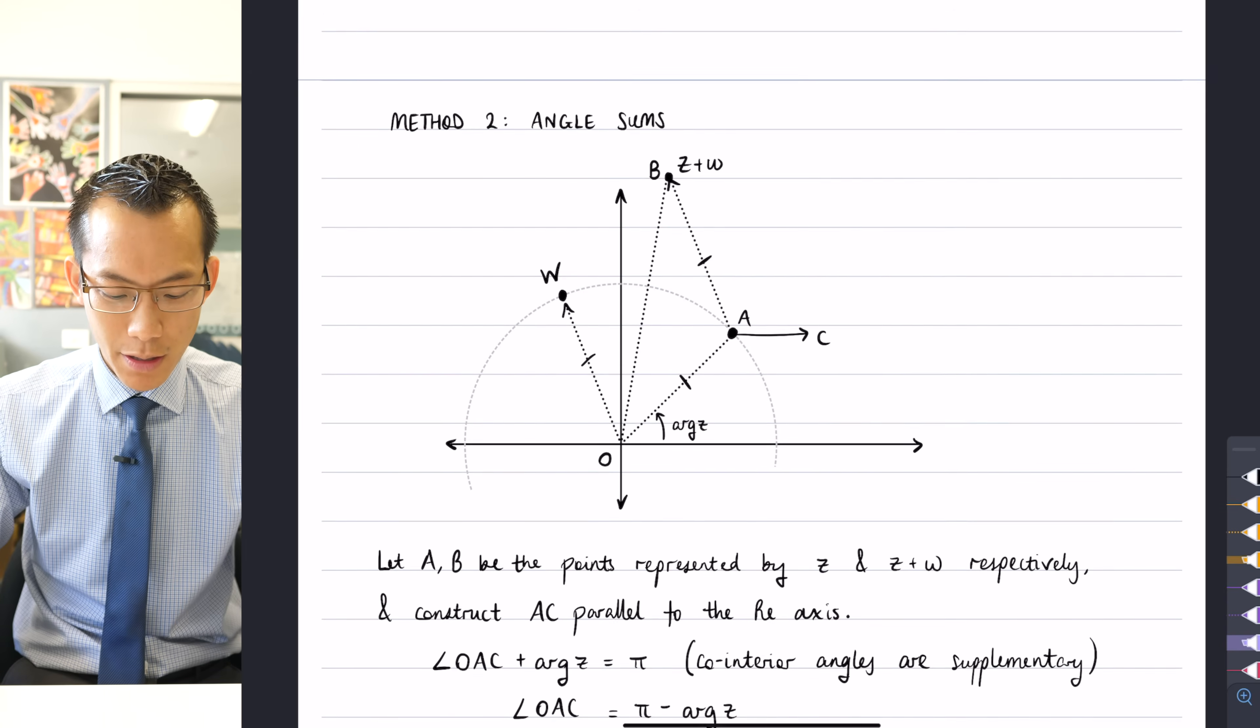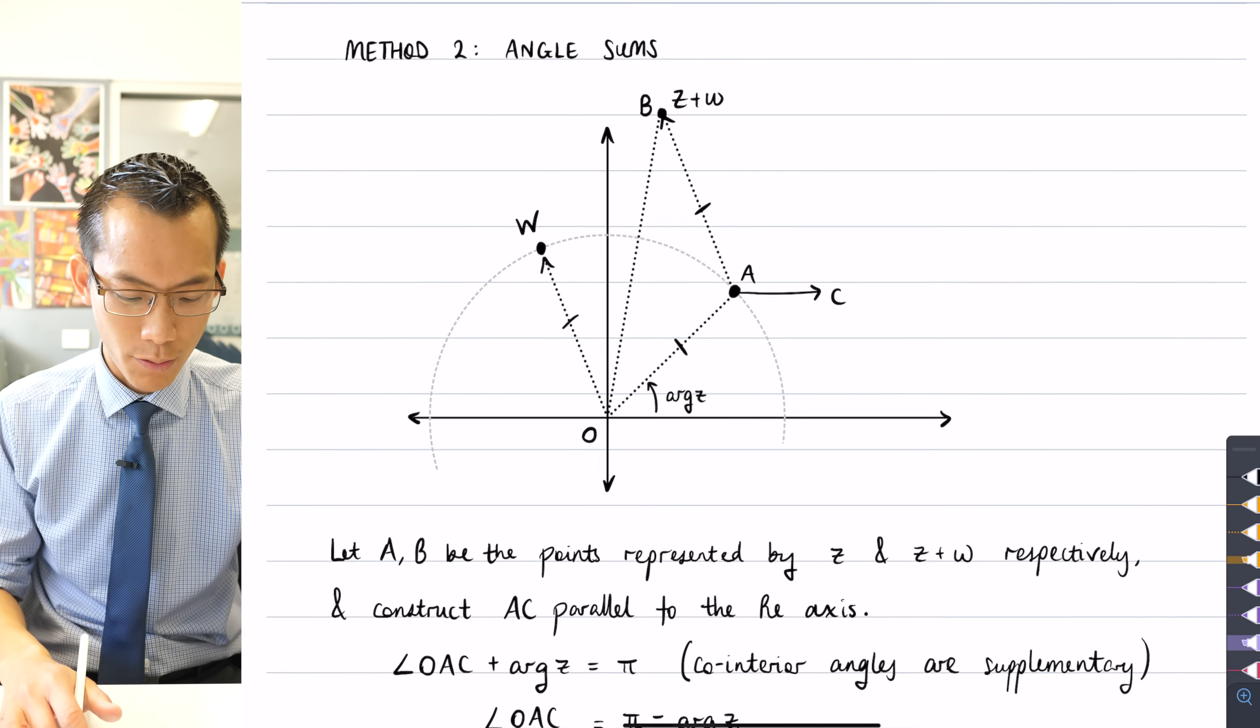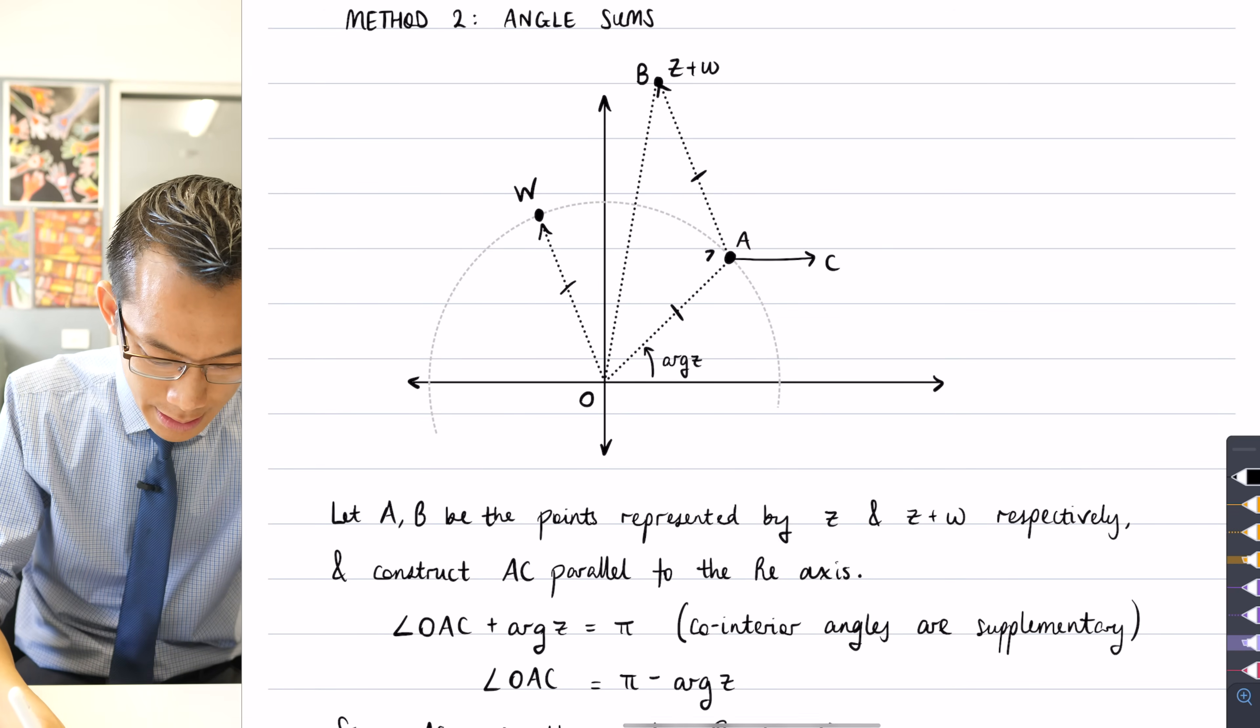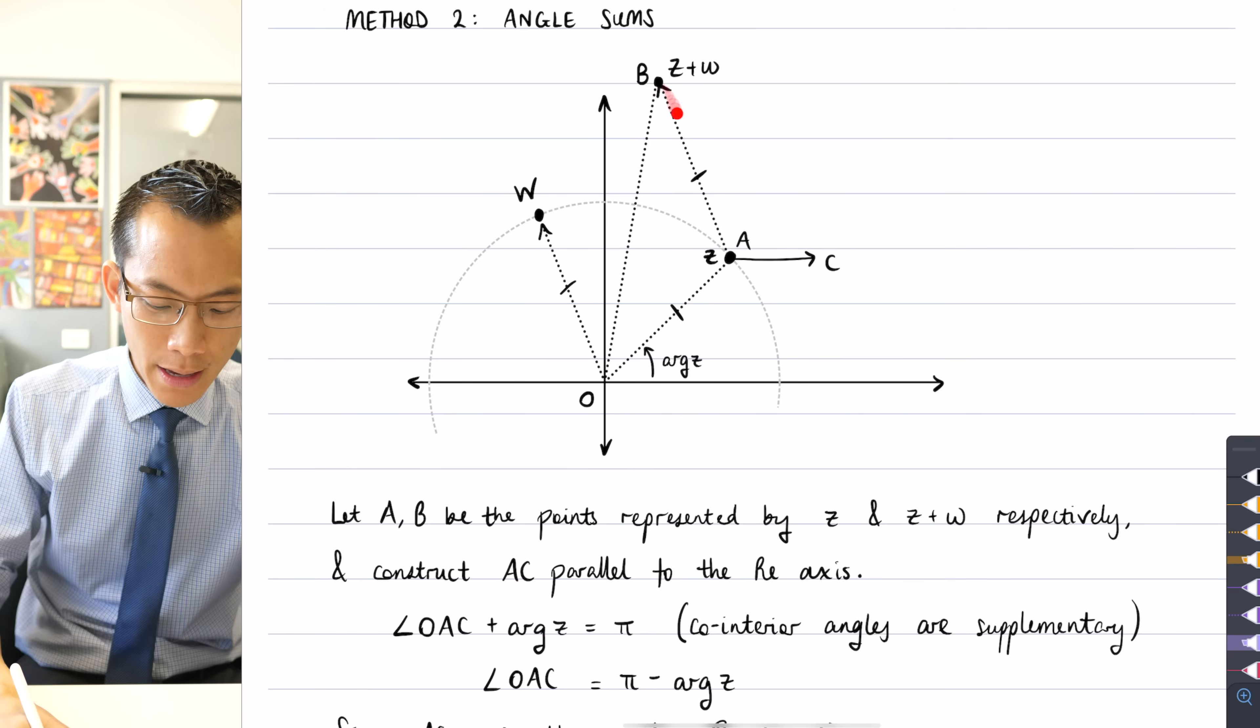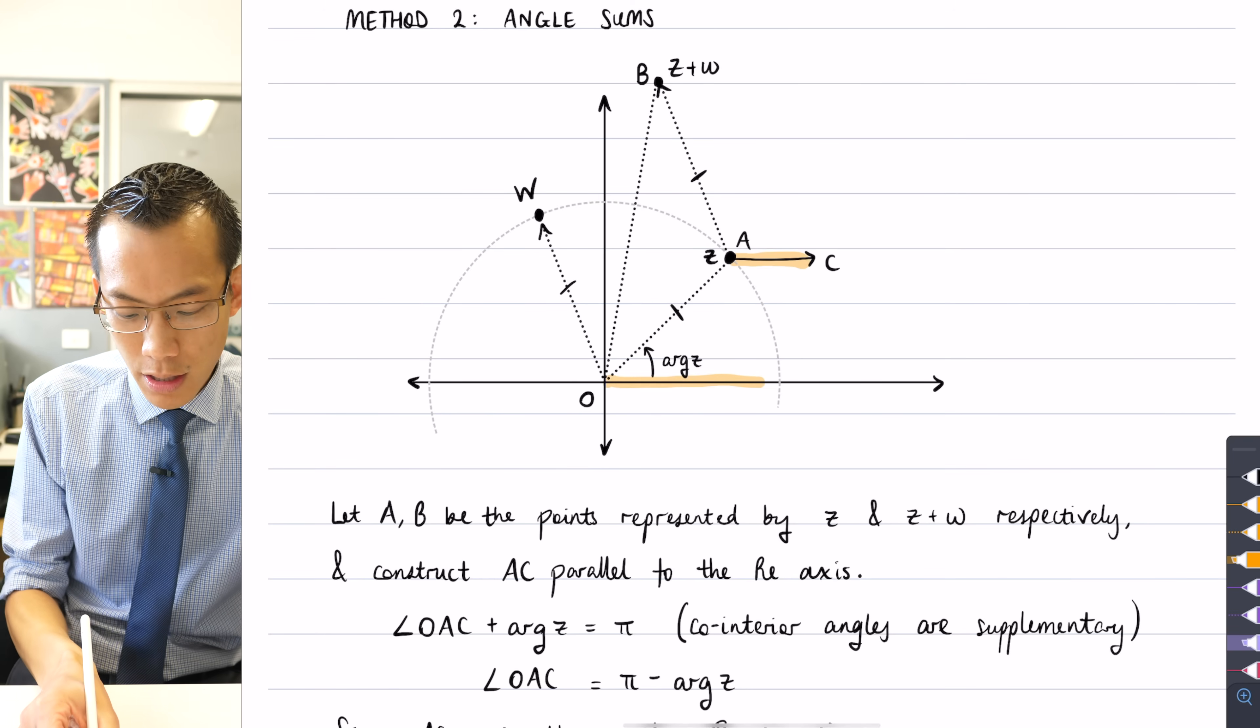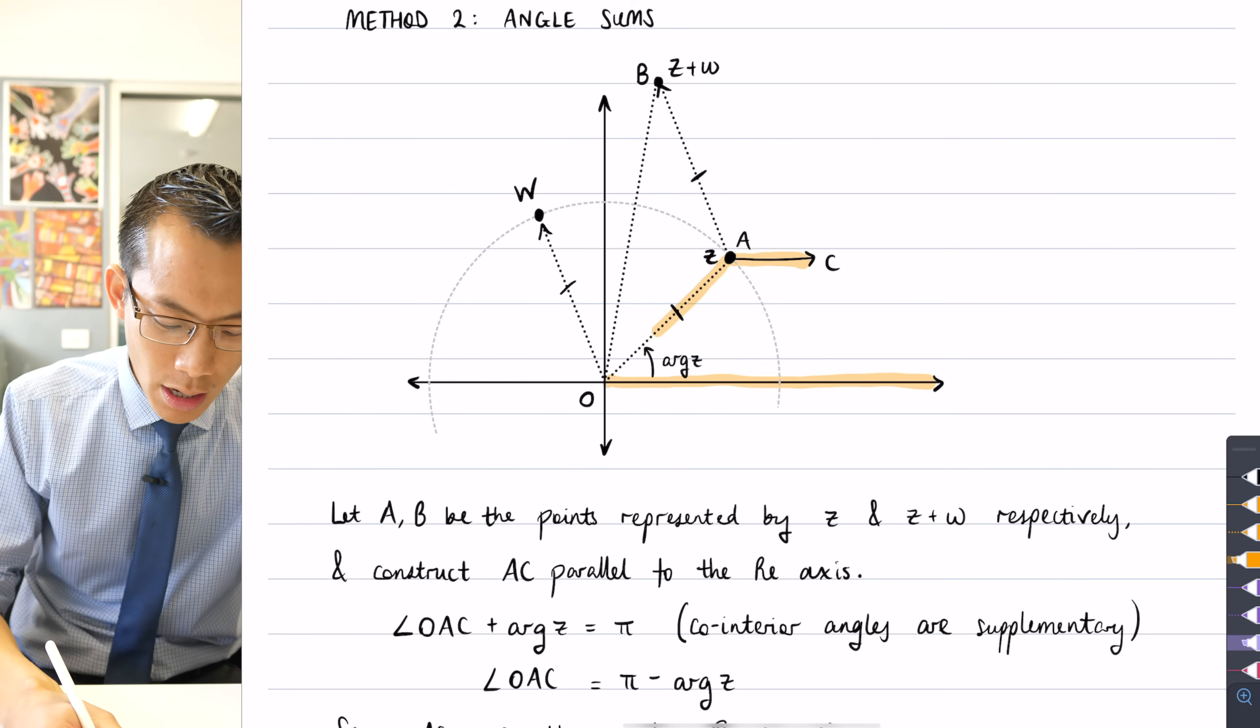I call this one angle sums because there's a whole bunch of, you know, angles I'm going to add up together. I'm not using the same geometric properties that I did before in order to solve this. So how do I begin? I've described, I've called this point here, which is represented by the complex number z. I've called that capital A. I've got capital B up here. And then I've also added this C such that it goes in the positive real direction, which makes it parallel to the positive real axis.